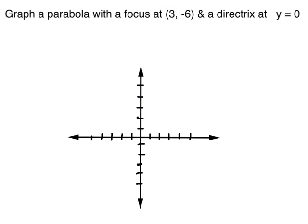Let's try another one. Graph a parabola with a focus of (3, -6) and a directrix at y equals 0. The focus at (3, -6) means I go 3 to the right and 6 down — approximately right here. The directrix at y equals 0 is the x-axis, so the line is right there. The vertex is going to be the same distance from the focus and the directrix, so it goes right there.